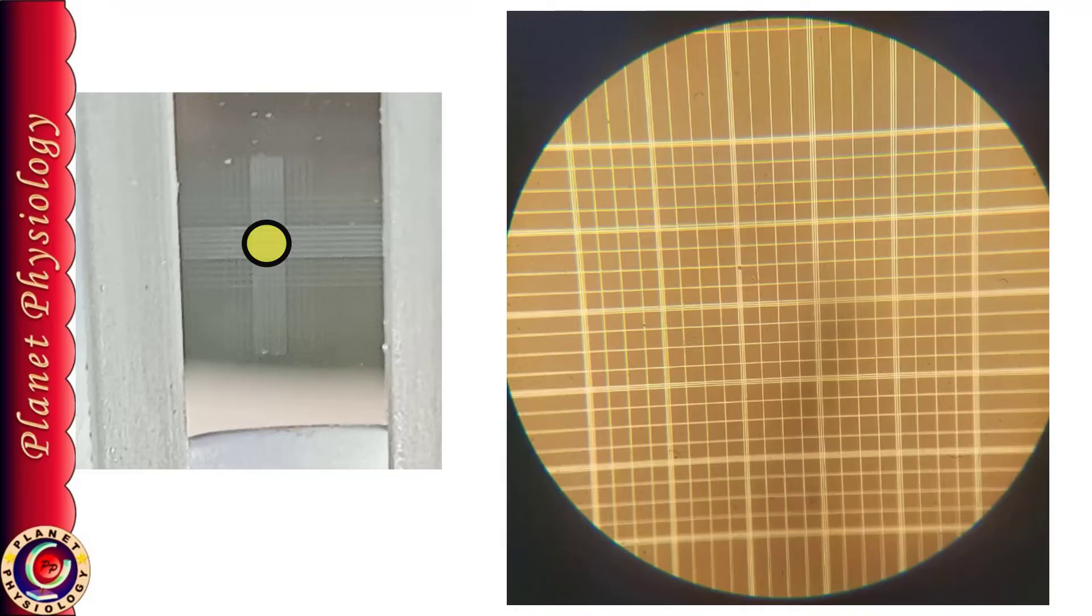So you have to adjust the stage in such a way that entire RBC square is visible. How you can make it sure? You can see 25 medium size boxes bounded by triple lines. This makes sure that you are in the central RBC square.